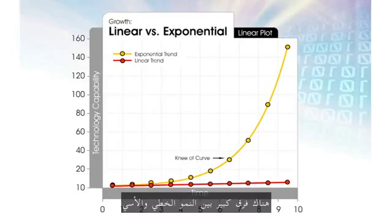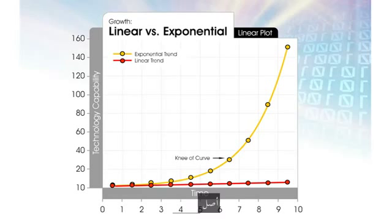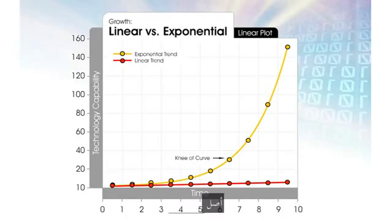There's a big difference between linear and exponential growth. If I take 30 steps linearly — 1, 2, 3, 4, 5 — I get to 30. If I take 30 steps exponentially — 2, 4, 8, 16 — I get to a billion. It makes a huge difference.